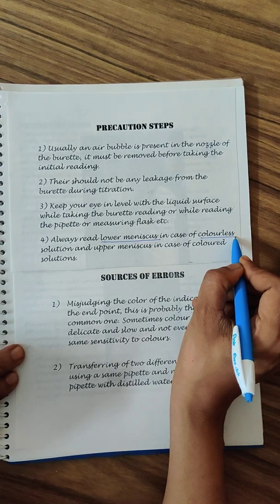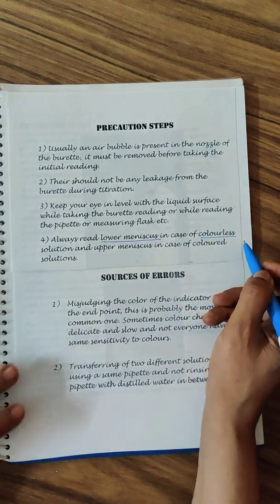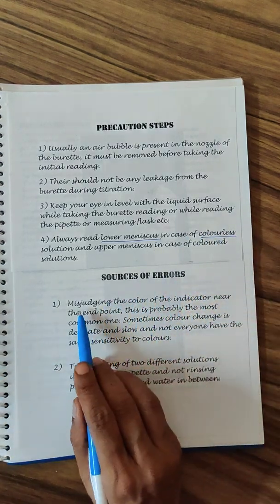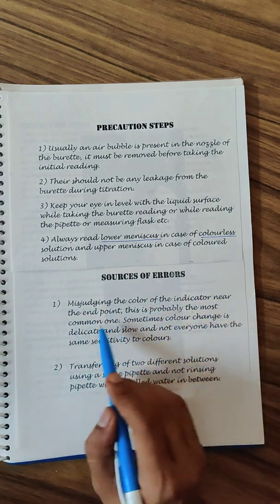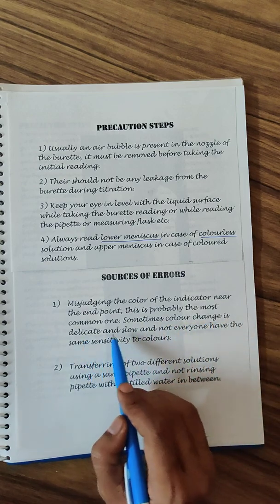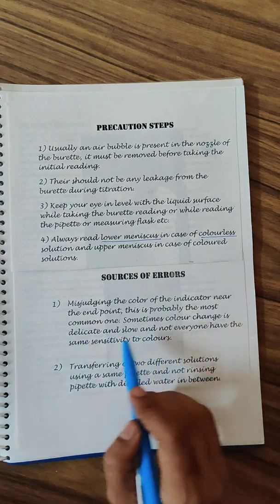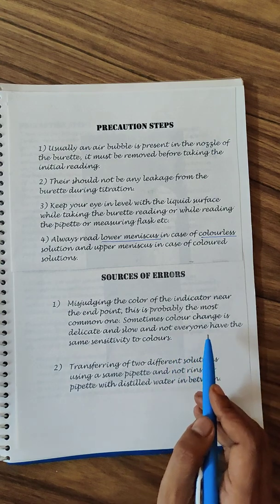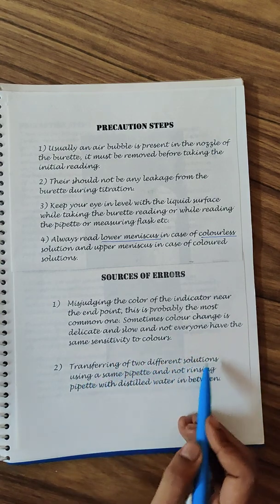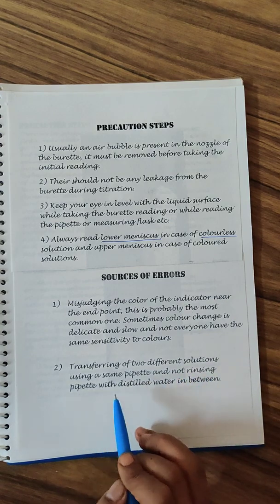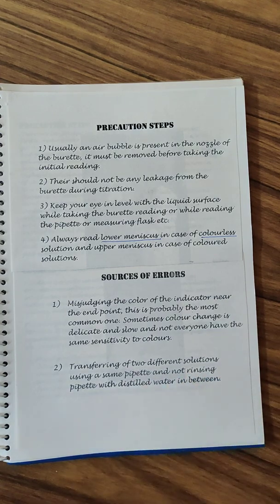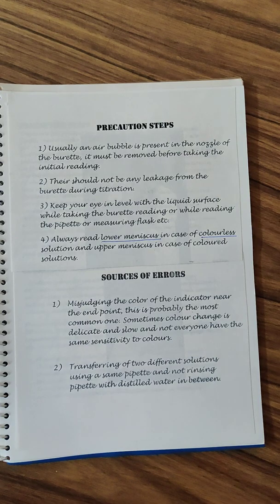Sources of error could be misjudging the color of the indicator near the endpoint. This is probably the most common error. Sometimes color change is delicate and slow and not everyone has the same sensitivity to the colors. Transferring the two different solutions using the same pipette and not rinsing the pipette with distilled water in between is also a problem which is commonly observed.